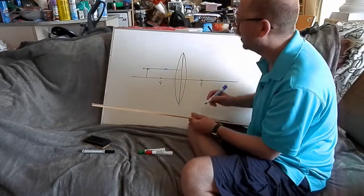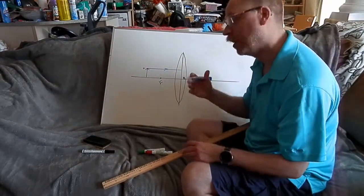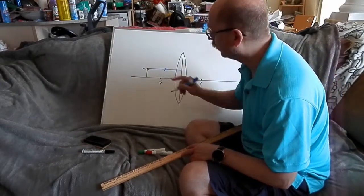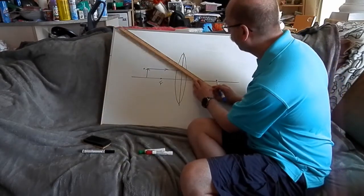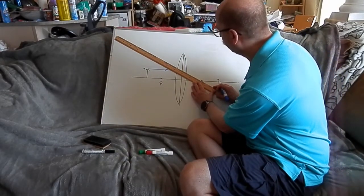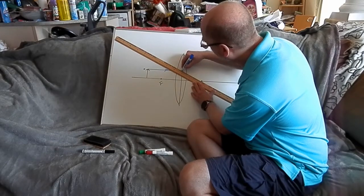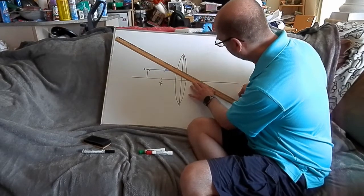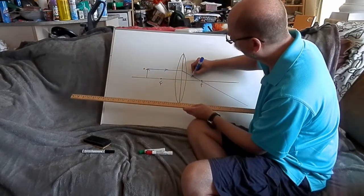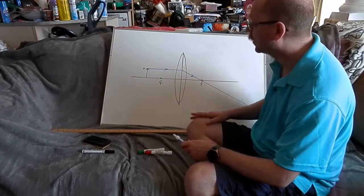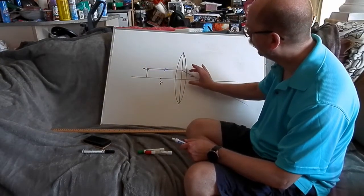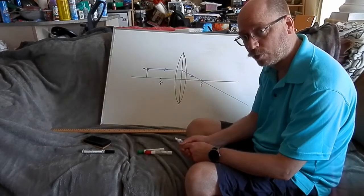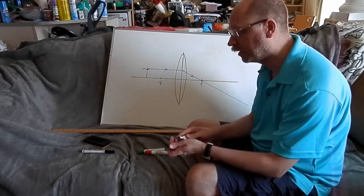Now the first rule that I'm going to use is a ray parallel to the principal axis, same as before. But now instead of reflects through this focus, it's going to refract, I should say, sorry, through this focus.